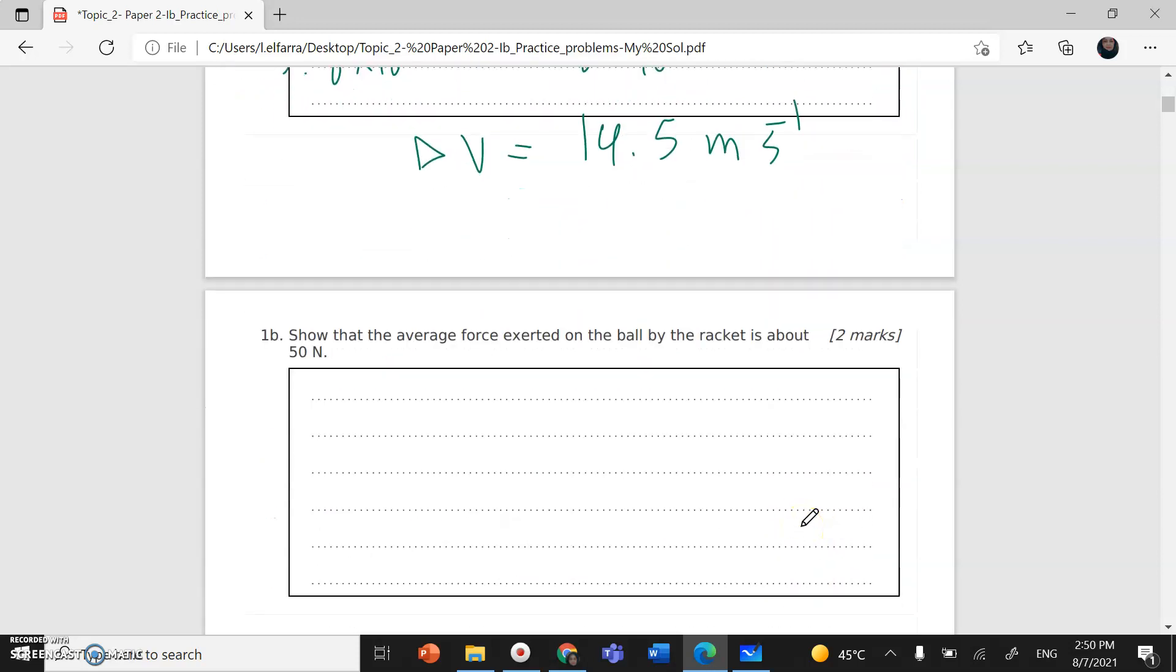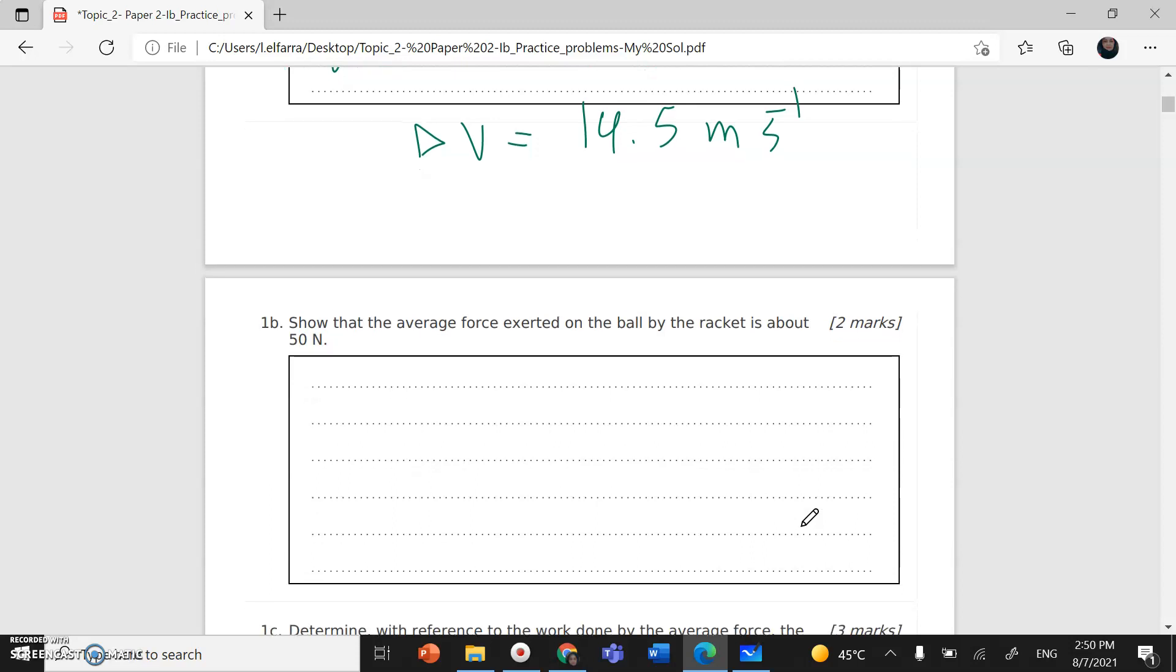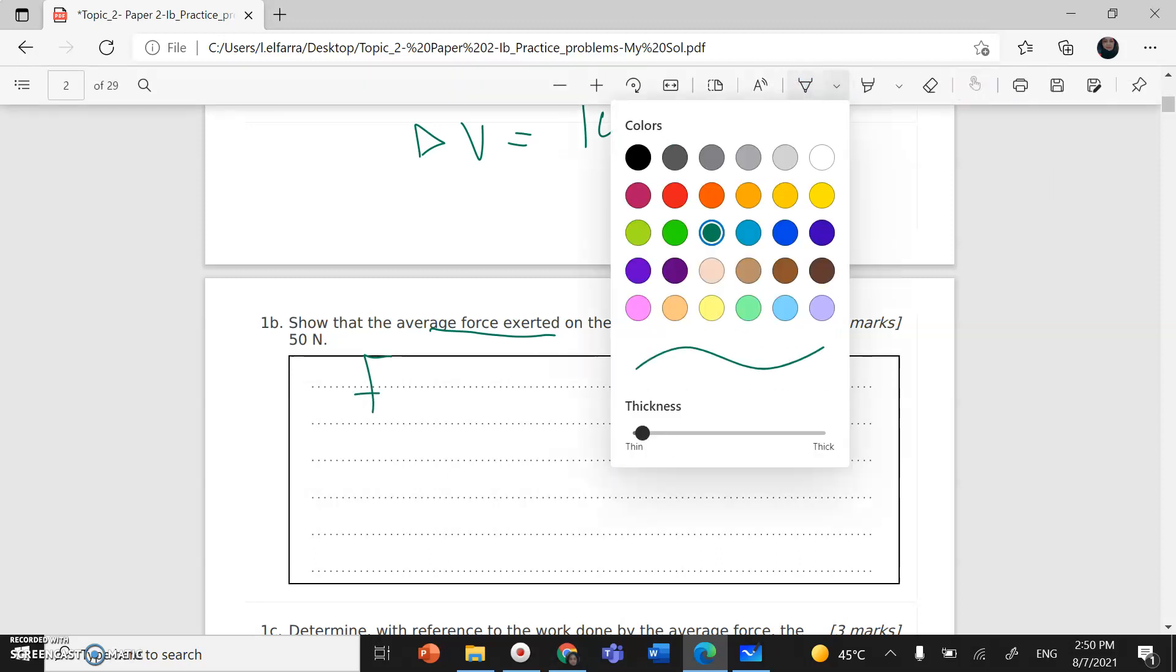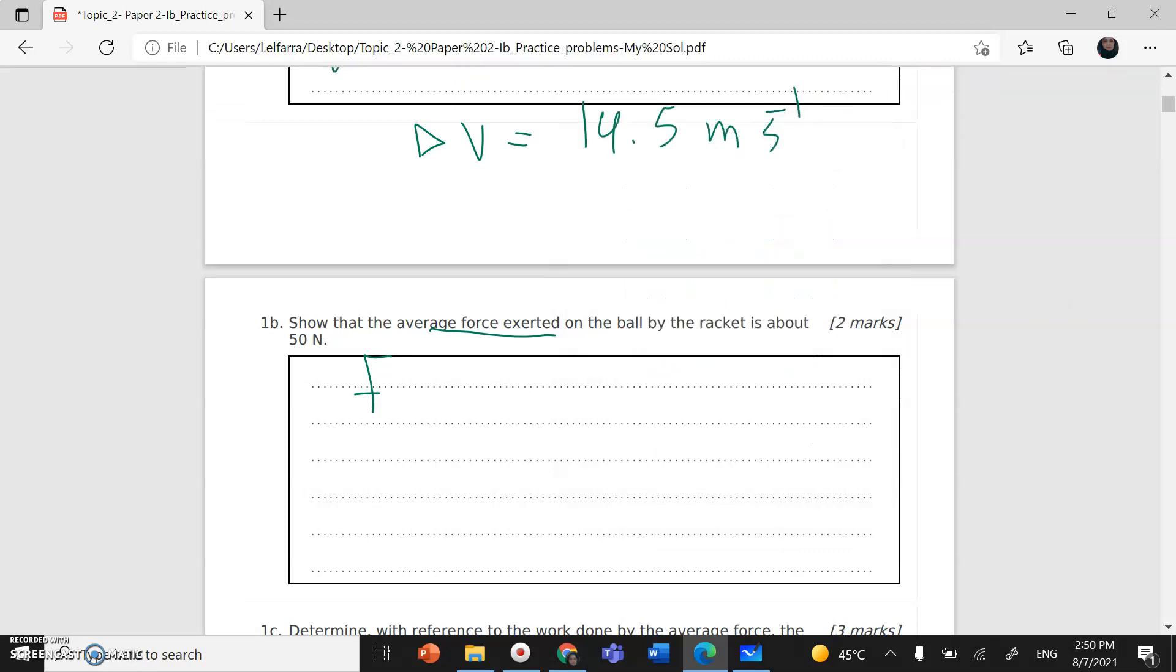Part B of the question: show that the average force exerted on the ball by the racket is about 50 newtons. Now from Newton's second law, I have force equals change in momentum, so F equals change in momentum with respect to change in time.